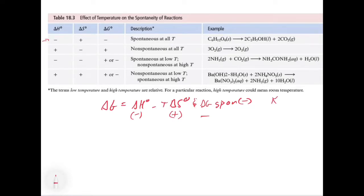In that case, K will always be greater than zero because it'll always be a negative delta G, so there'll always be a preference for products. Now the intermediate case: if delta H is negative but delta S is also negative, the delta H makes us happy but the delta S is what works against us, because we're subtracting a minus. Delta G will be spontaneous, but only when T is low.